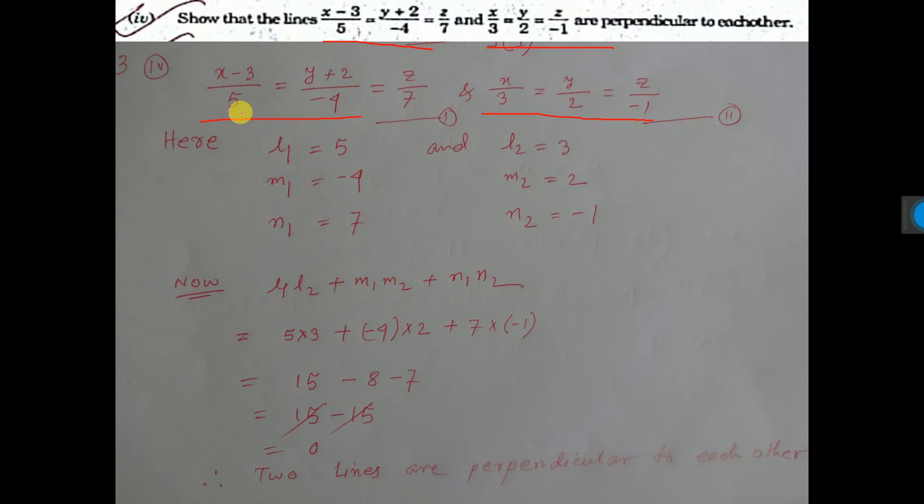This is the direction ratio or direction cosine you can tell. Direction ratio, this L, M, N, I give L₁, M₁, N₁. And this is direction ratio or direction cosine you can give name.